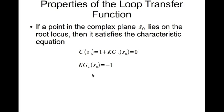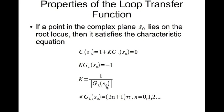k is real. For a complex number you can find the magnitude and angle. You can write k equal to 1 divided by the magnitude of g_L evaluated at s-naught. And since g_L equals minus 1 divided by k, which is a negative number, and treating a negative number as a complex number its phase is pi and odd multiples of pi — so the angle of g_L evaluated at s-naught is (2n plus 1) times pi.